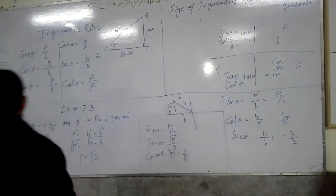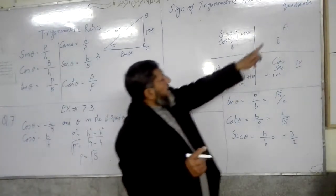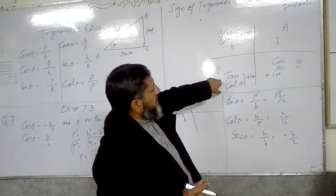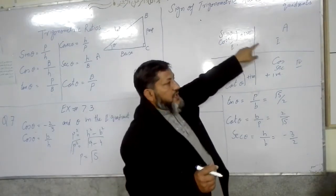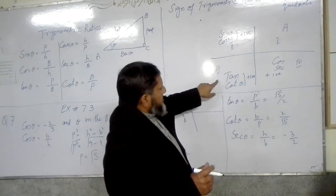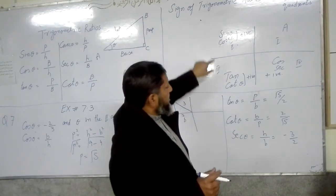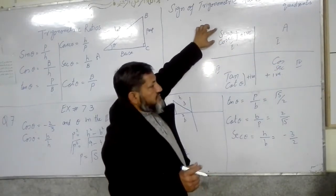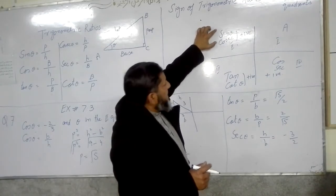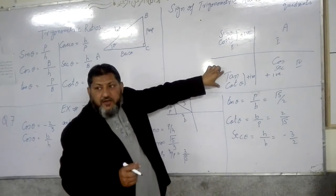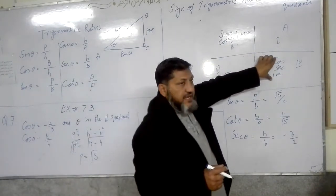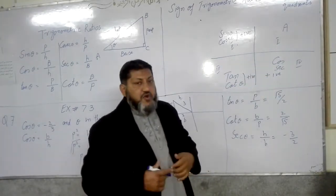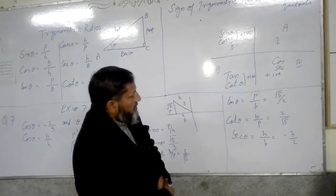In the fourth quadrant, C means cosine and its reciprocal secant are positive; the remaining are negative. If you want to write this as a sentence, it can be written as: 'Add Sugar, A Cup of Tea.' Here A stands for Add (All), S for Sugar (Sine), T for teaspoon (Tangent/Cotangent), and C for Cup of Tea (Cosine/Secant).